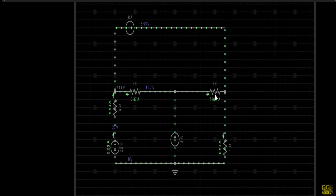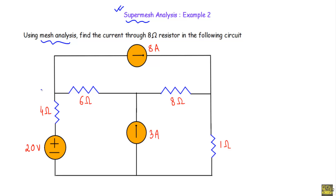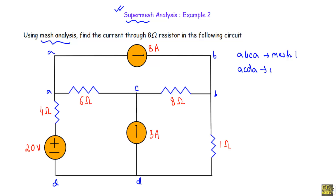Now let me solve this circuit. First, I will identify the meshes in the circuit. The path A-B-C-A will indicate mesh number one. The path A-C-D-A will indicate mesh number two. The path C-B-E-D-C will indicate mesh number three.